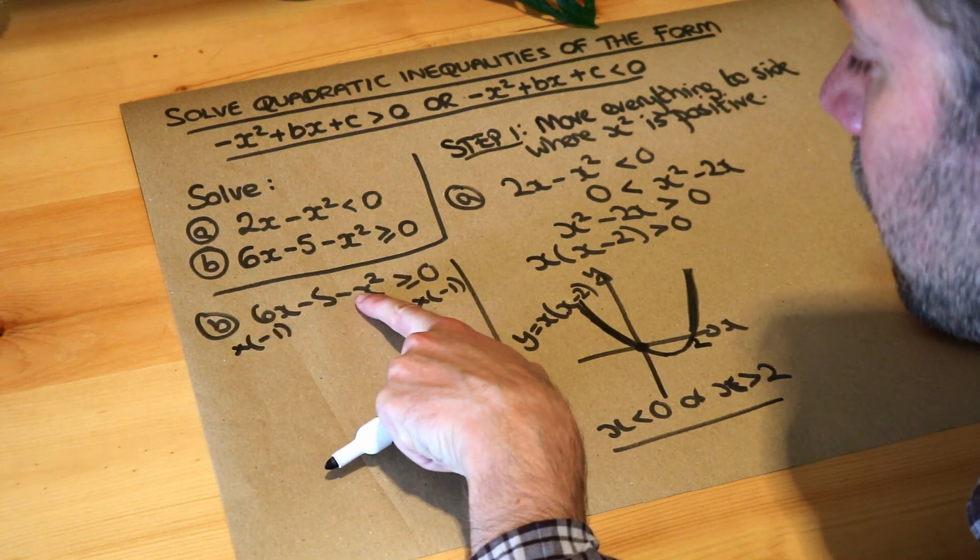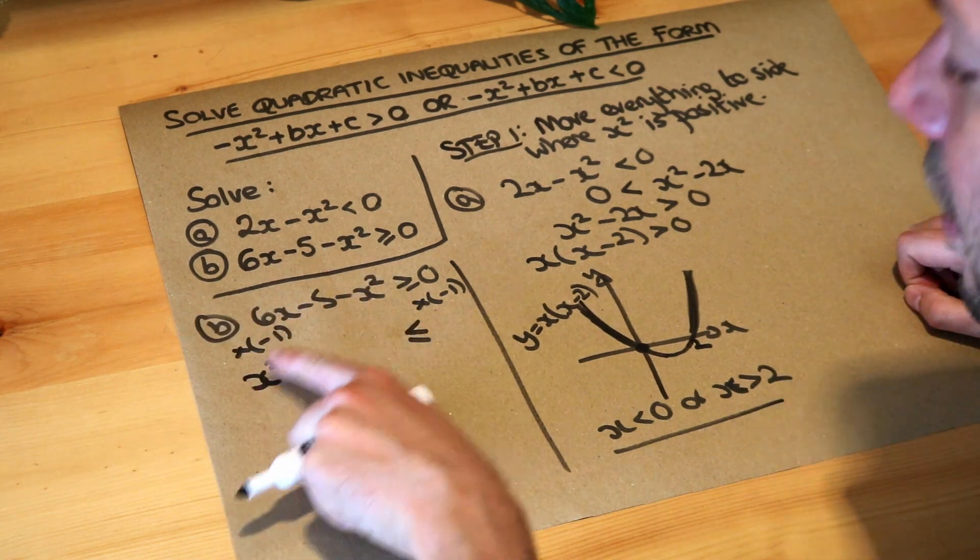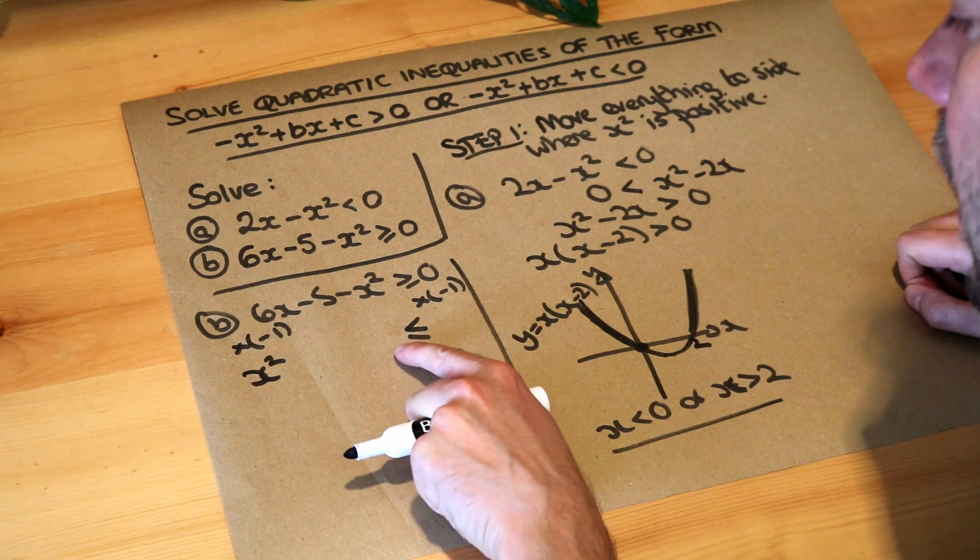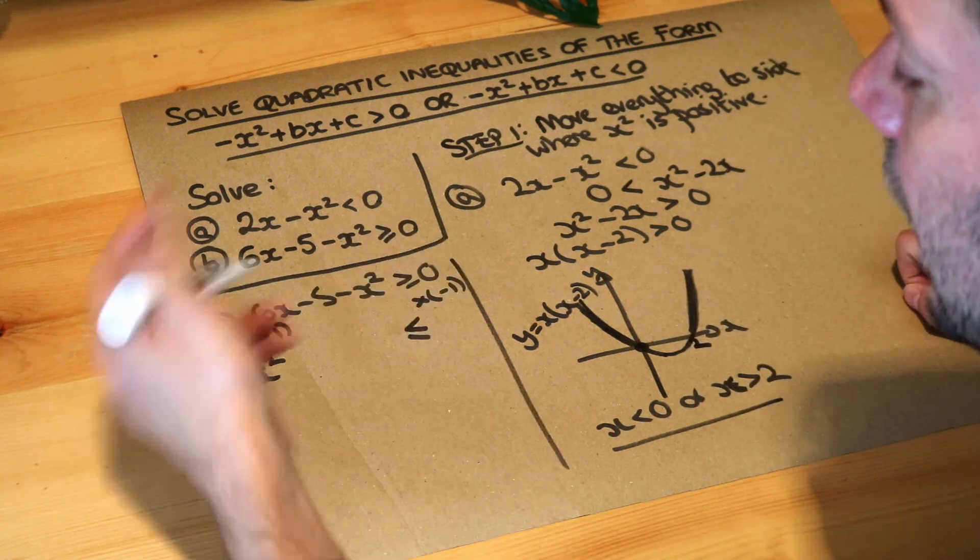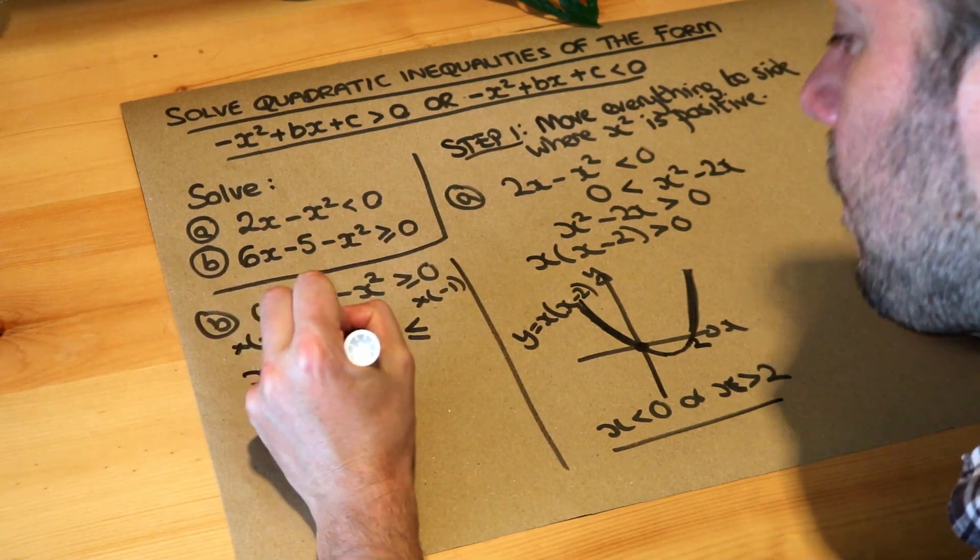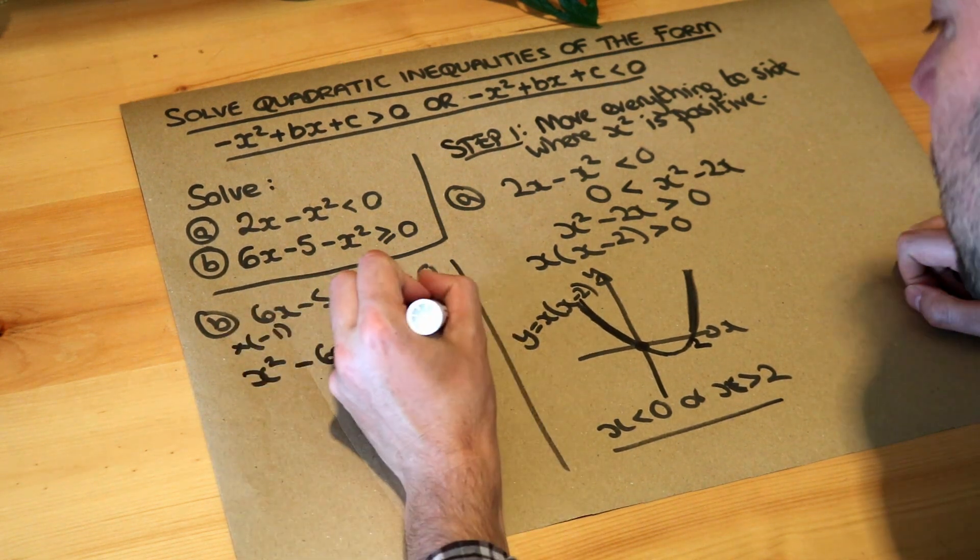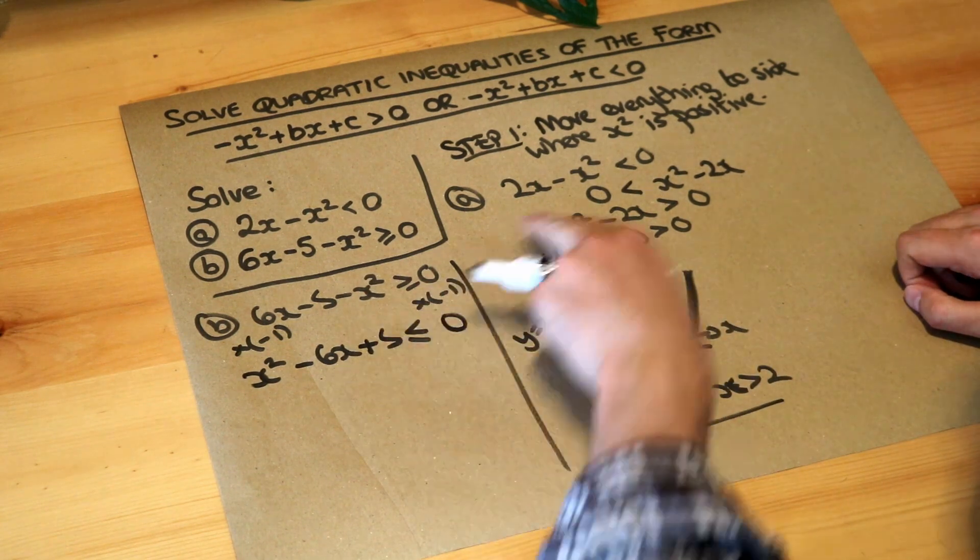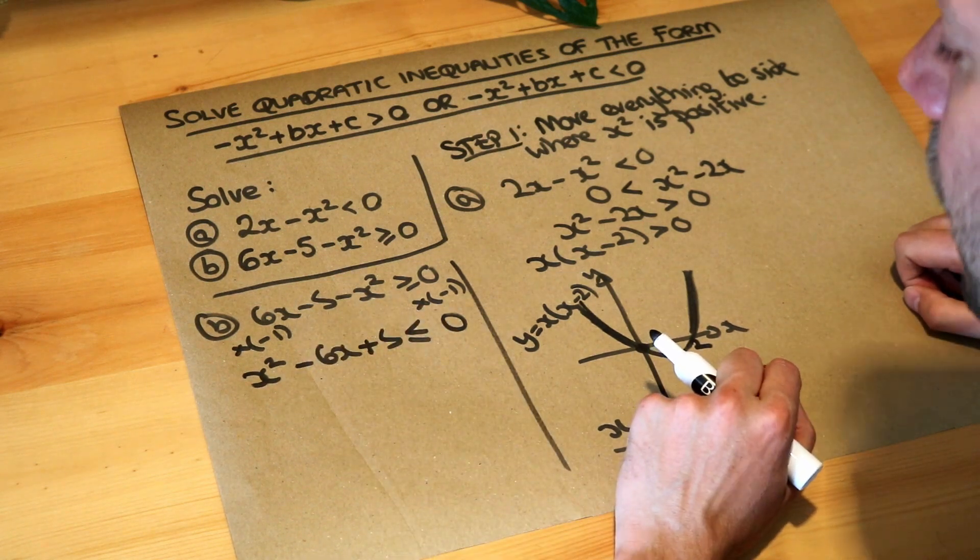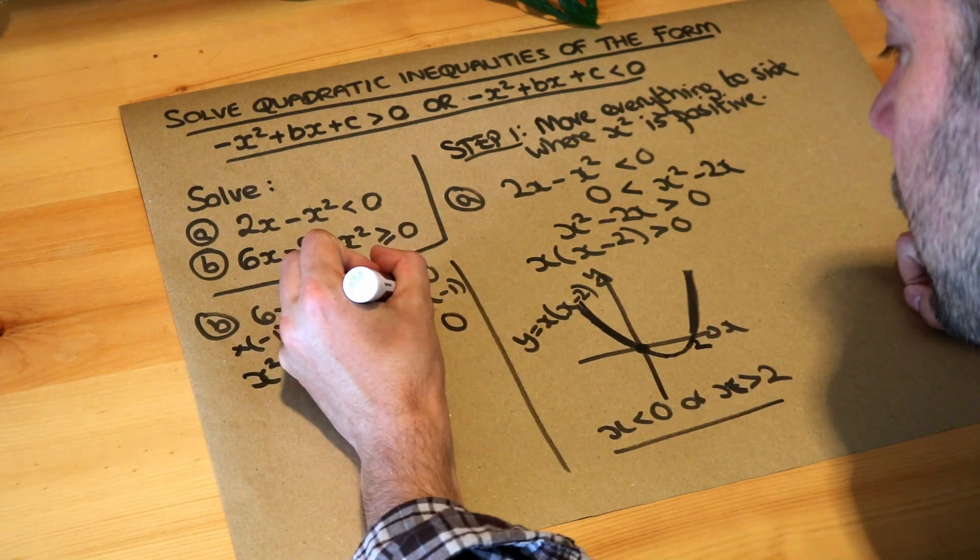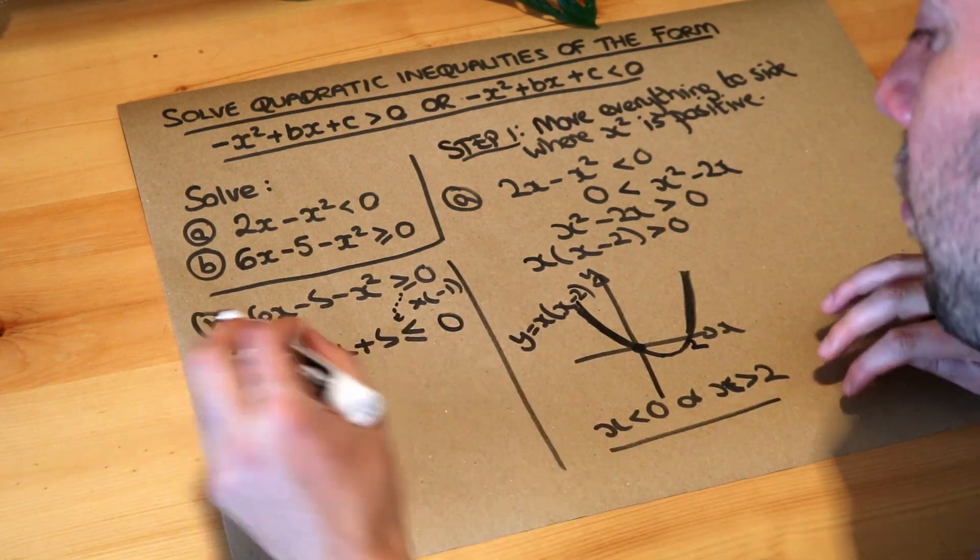So if I times this by minus one the negative x squared becomes positive x squared and we always want to put the x squared term first then the x term then the constant term. If that's positive 6x we times it by negative one it negates it, it becomes minus 6x and the minus five times by minus one becomes positive five. So that's a neat little trick which saves you having to do quite so many steps. So if that's greater or equal to, that becomes less equal to. Now we can do what we did before, we just have to factorise this.